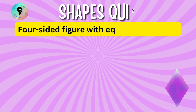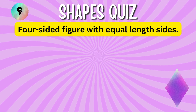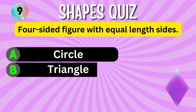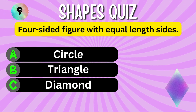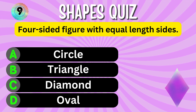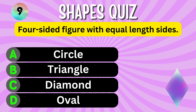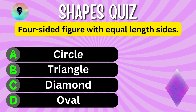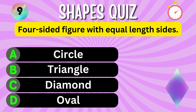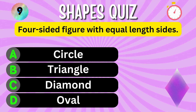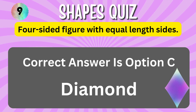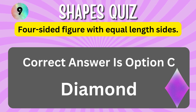An elliptical shape resembling a stretched-out circle. Option A. Option B. Option C. Option D. You have 5 seconds to choose the correct answer. Your time starts now. The correct answer is Option C, Diamond.